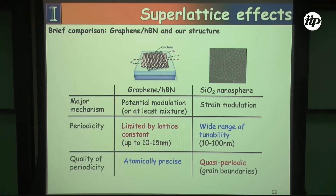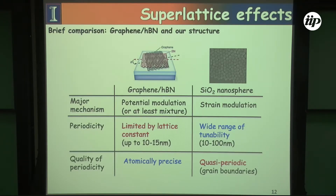Where the periodicity with boron nitride is limited by the lattice constant, with nanospheres the periodicity has more tunability. For an applied sense, you could engineer things using nanoparticles in an easier way than by using boron nitride. The difference, of course, is that the boron nitride is atomically precise, whereas the silicon dioxide nanospheres are not.